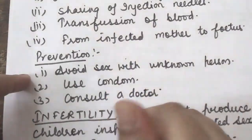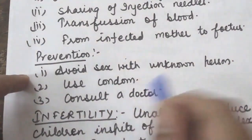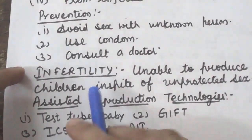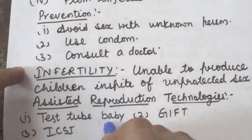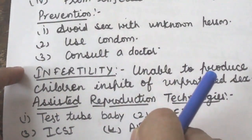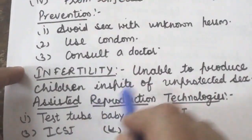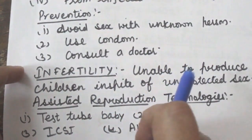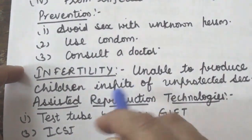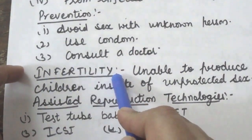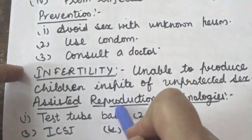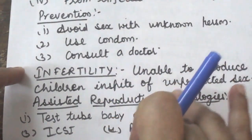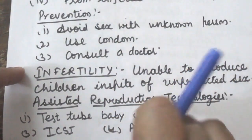Next is the topic of infertility. All over the world, including India, a large number of couples are infertile — that is, they are unable to produce children in spite of unprotected sex. Such a phenomenon is termed infertility. There are many reasons; infertility may be in males or in females.